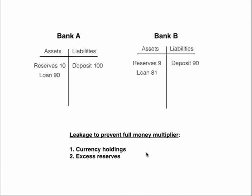What will prevent us from getting the full money multiplier? At any point along the process, if people decide to hold some cash — maybe some of the money gets lent out and not all of it ends up back in the banking system — then the whole process is going to be smaller, reducing the money multiplier. Also, if banks aren't going to completely lend out their excess reserves, then the loan will be smaller and the rest of the process will be smaller too. Either of these things gives us less than the full money multiplier, so we're usually talking about the maximum we can get.